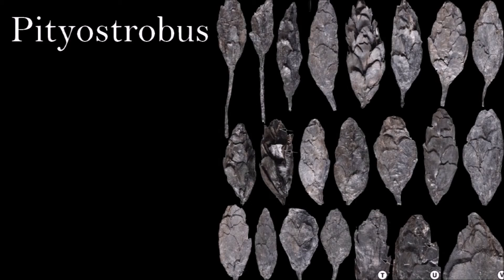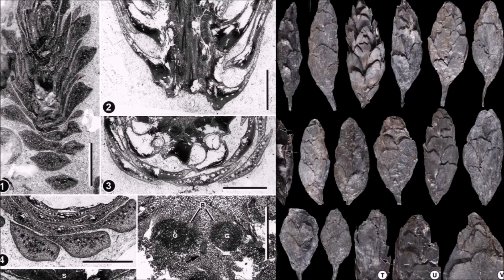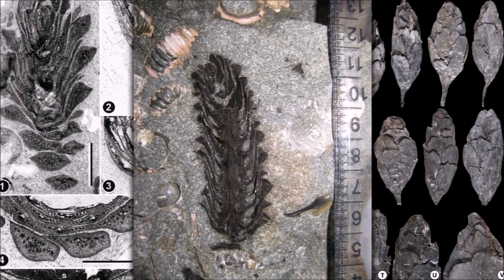Pityostrobus was a seed-bearing conifer cone. The seed-bearing scales were positioned in the axils — the angle between a leaf stem and the main stem — of very small bracts. The seed-bearing scales thinned toward their tips, unlike in modern pinecones. In mature cones, each ovuliferous scale had two winged seeds separated by a central ridge. The closest living relative to Pityostrobus is Pinus, the genus that contains pines and related conifers. However, Pityostrobus differs from Pinus in that it possessed separate bract and ovuliferous scales, whereas in Pinus cones the bract and ovuliferous scales were fused together and had a woody consistency.